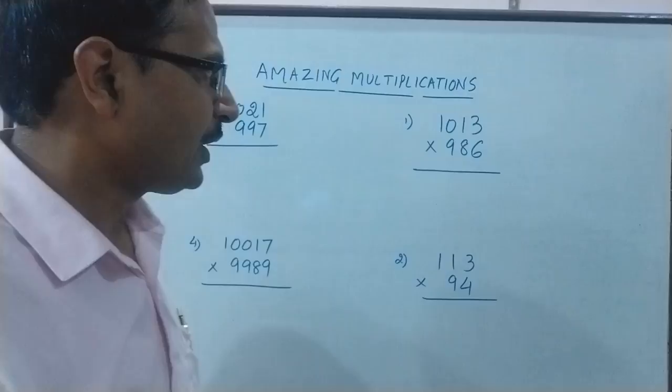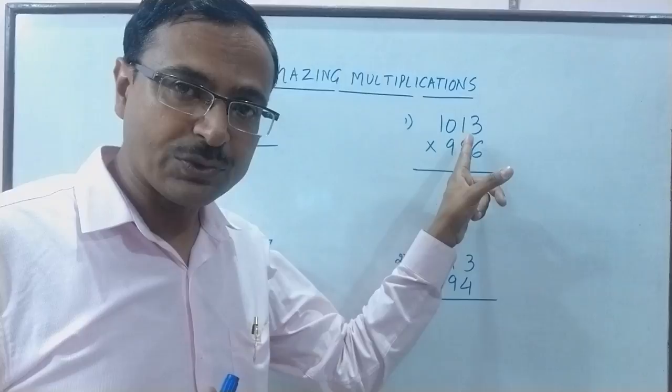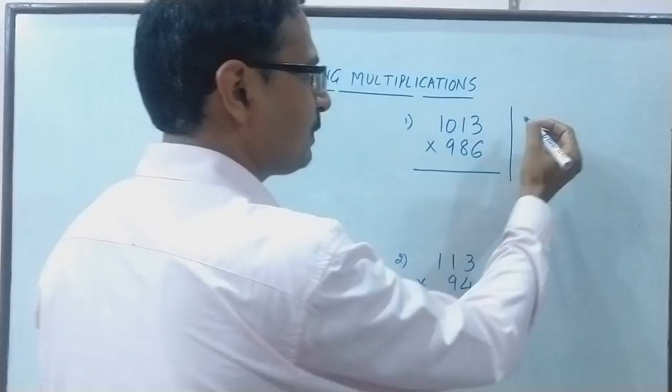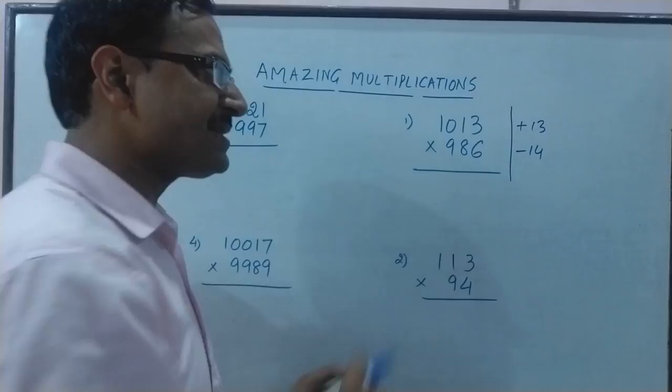Now see here we have two numbers which are very near to 1000 but one of them is greater than 1000 and the other is less than 1000. Let's see the deficit or the surplus quantity first. This number is more than 1000 by plus 13 more and this is minus 14 less.